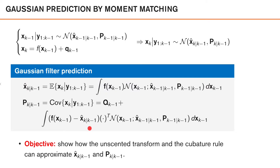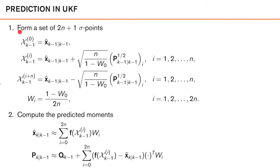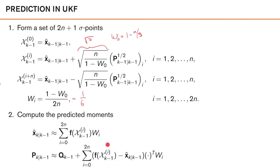The objective in the next couple of slides is to show how the unscented transform and the cubature rule can approximate these moments. To perform prediction in the unscented Kalman filter, we select 2n+1 sigma points that match the density of x_{k-1}. We form these by picking one at the mean, and then 2n points symmetrically around the mean. Our design parameter is the weight of the sigma point at the mean, w_0, and for Gaussian priors it is recommended to select w_0 = 1 - n/3. In which case, the scaling factors would be the square root of 3, and the weight for all other points will be 1/6. To compute the predicted mean, we simply plug the sigma points into f and evaluate the weighted sum. Similarly, to compute the predicted covariance, we plug the sigma points into the covariance expression, compute the weighted sum, and add the uncertainty from the process noise.